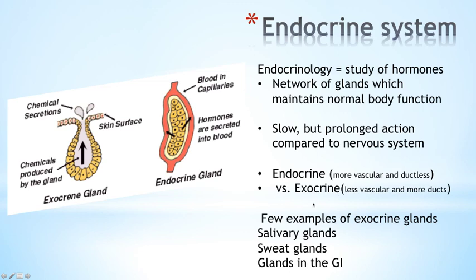A few examples of exocrine glands could be the salivary glands, the sweat glands, or the mucosal glands in the GI tract.